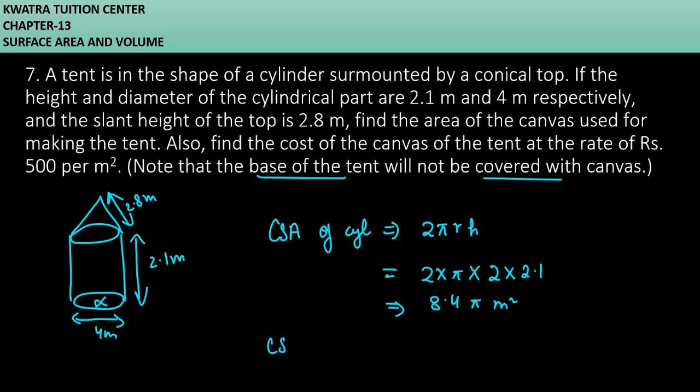So we can easily find the CSA of cone. It will be πrl. π's value as it is, r here will be the same as 2. How much value l is? 2.8. So just multiply 2 and 2.8. It will give you 5.6πm².